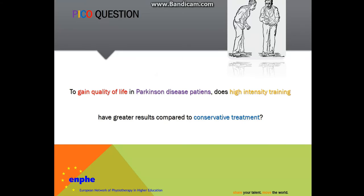Let's check a real example. To gain quality of life in Parkinson's disease patients, does high intensity training have greater results compared to conservative treatment? The person or problem is a Parkinson's disease patient. The intervention is high intensity training, compared to conservative treatment, and the outcome is gaining quality of life.